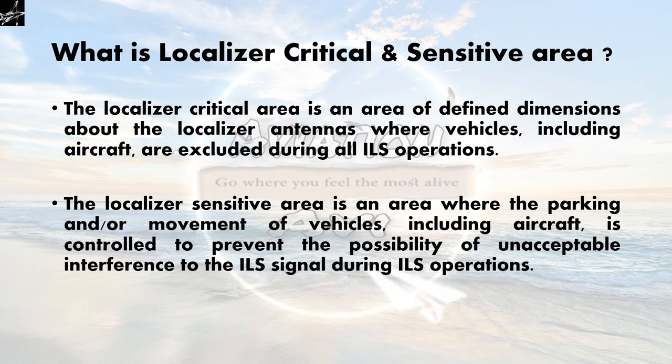What is the localizer critical and sensitive area? The localizer critical area is an area of defined dimensions about the localizer antennas where vehicles, including aircraft, are excluded during all ILS operations. The localizer sensitive area is an area where the parking and/or movement of vehicles, including aircraft, is controlled to prevent the possibility of unacceptable interference with the ILS signal during ILS operations.